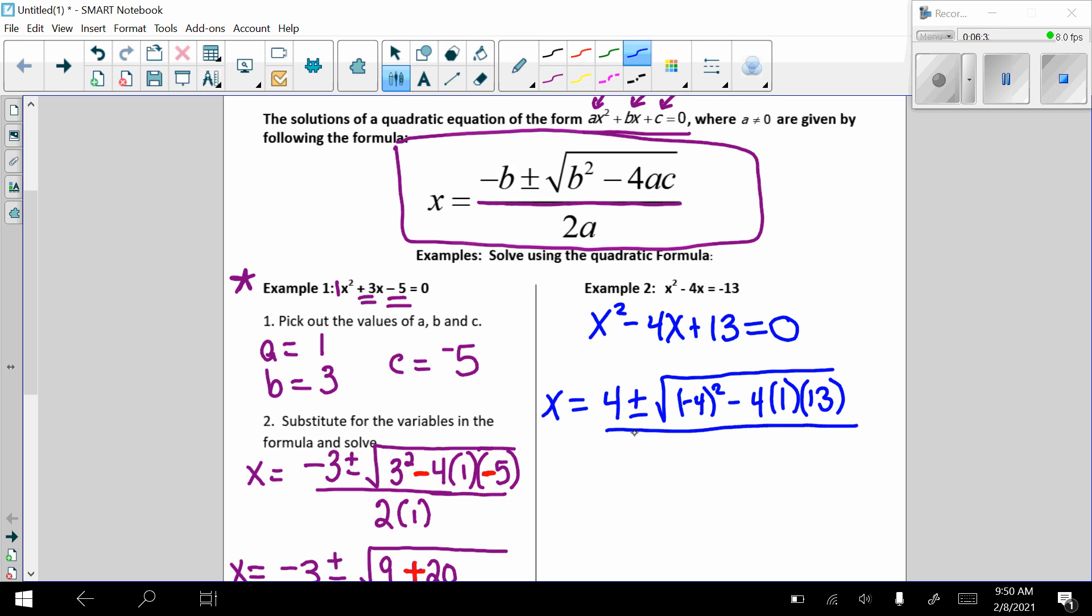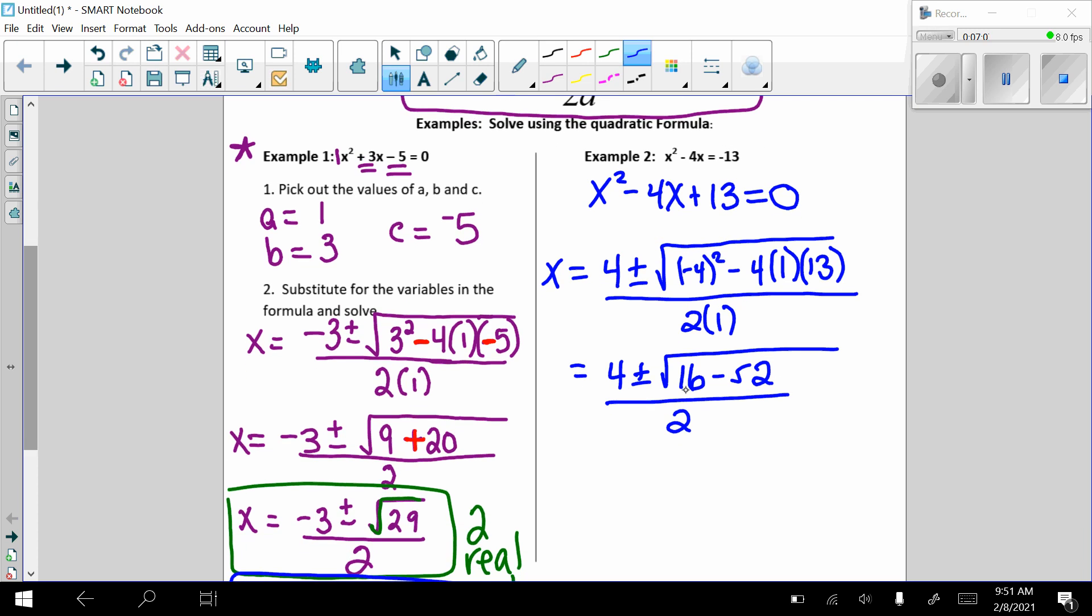And again, that's all divided by, make sure you put that under the whole thing, not just the square root part. Two times one, because again, our a was one. All right, so we simplify. So we have four plus or minus. Remember, anything squared here is going to give us a positive. So this is positive 16 minus four times 13, which is 52. Okay, all divided by two. 16 minus 52 gives us negative 36 inside that square root.